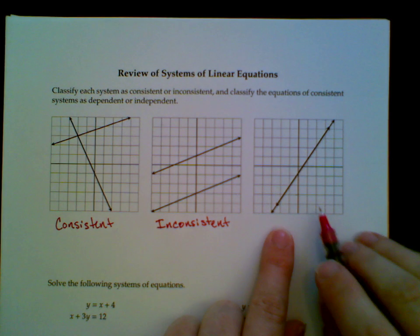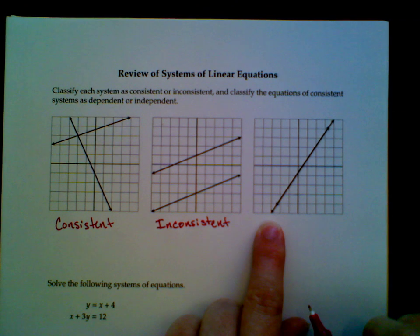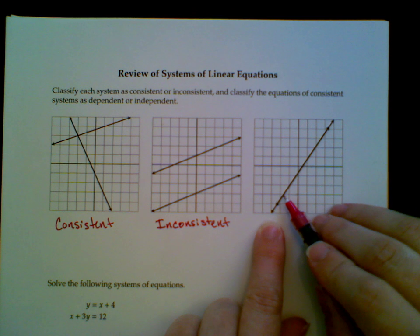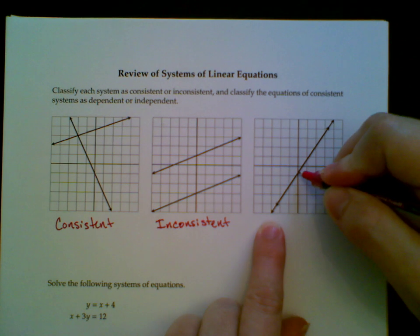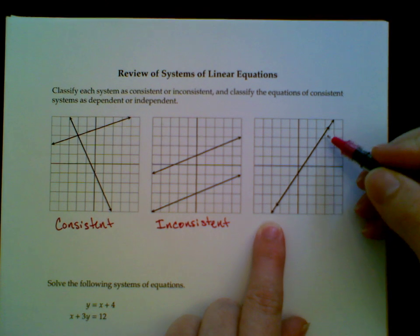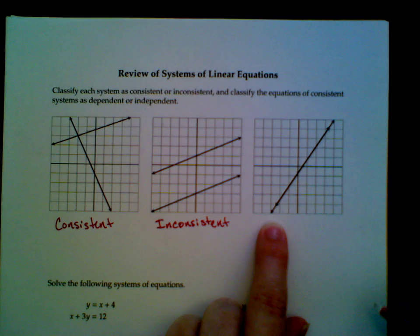And finally, this last one, I have two lines that are right on top of each other. I can pick this point is definitely on both lines. Actually, if a point is on one line, it's on the other, since their graphs are actually the same.